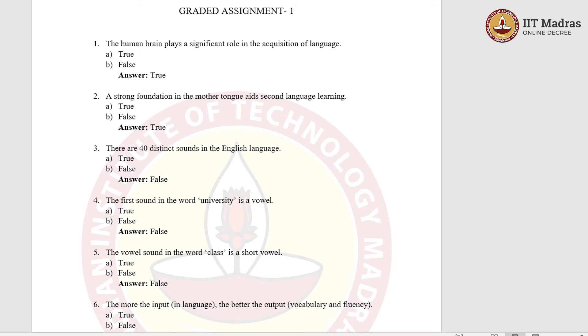The third question is: there are 40 distinct sounds in the English language. Option A, true. Option B, false. The right answer is option B, false. Because there are 44 sounds in the English language.